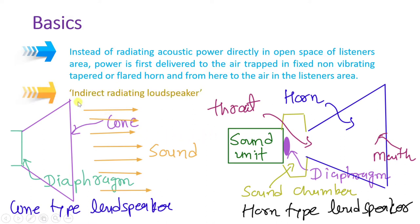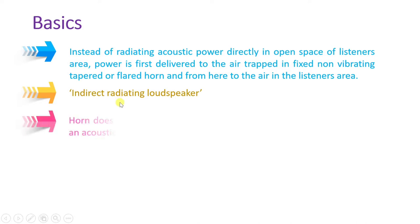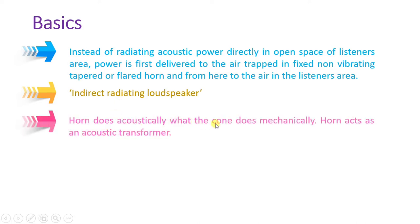The basic definition: horn type loudspeaker is an indirect radiating loudspeaker, while cone type loudspeaker is a direct radiating loudspeaker. So horn does acoustically what cone does mechanically. The cone was vibrating mechanically and generating sound, while here the horn is just guiding that sound wave.